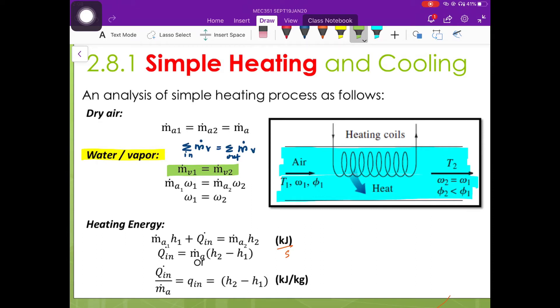Since we know that ṁᵥ is equal to ṁₐ times omega, therefore, we are going to have this expression. Since we know that the specific humidity at state 1 is equal to the specific humidity at state 2, therefore, we can assign this as omega. Now, we can get this type of expression for our mass balance for water or vapor.